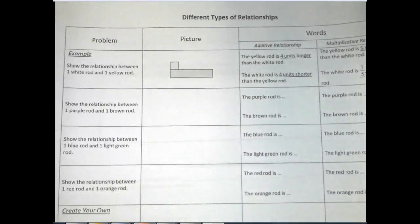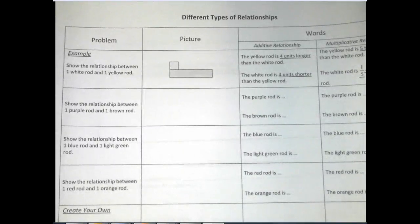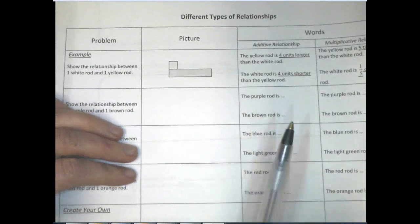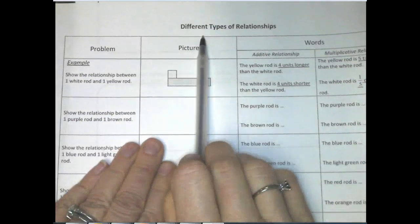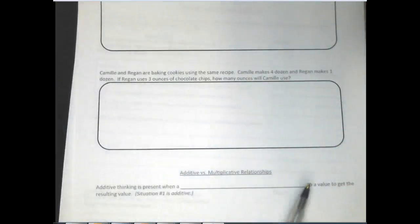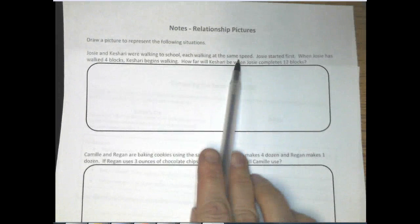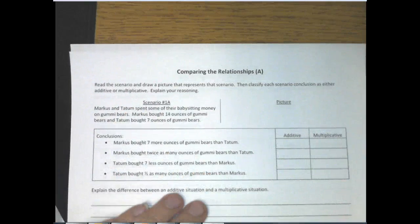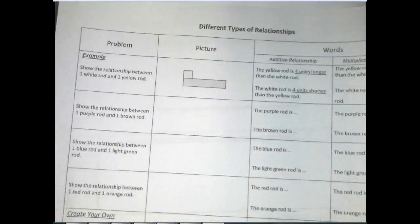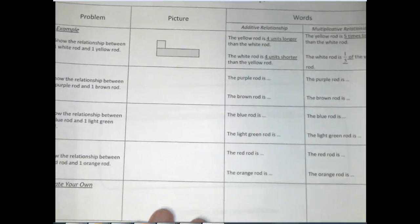Hey Solomon, it's Mrs. Englade. So this is what we did on Monday for our lesson. If you want to follow along and get out the papers that I sent to you, it's going to be this form called Different Types of Relationships. The next page is going to be Notes with the Relationship Pictures, and the third and fourth pages are going to be Comparing the Relationships A and B. Pause the video if you need to get those ready.